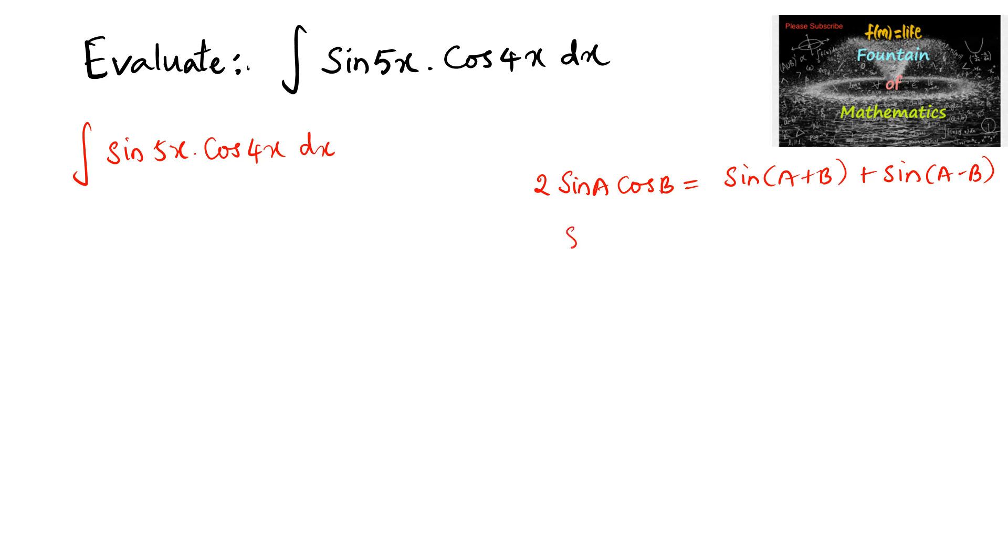So, sin a cos b can be written as 1 by 2 times of sin of (a+b) plus sin of (a-b).